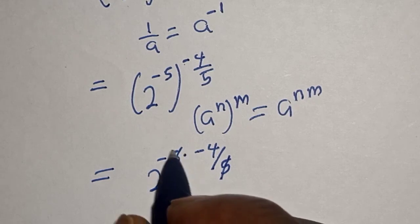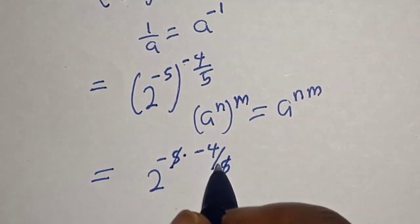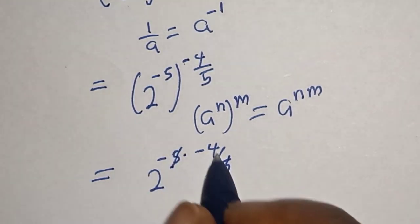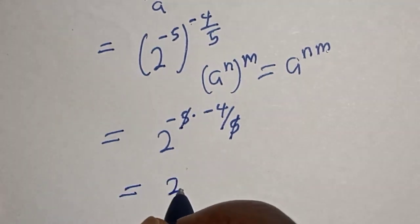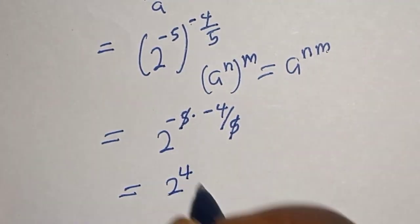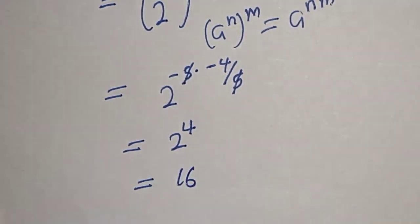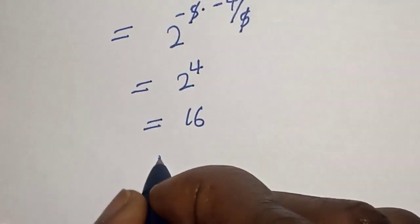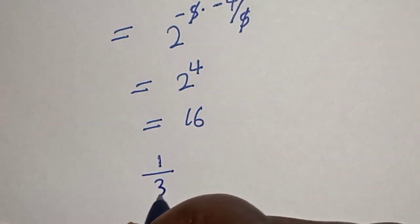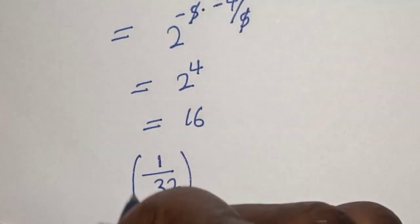If you multiply minus 5 by minus 4, you have plus 4. This is equal to 2 raised to power 4, and 2 raised to power 4 is equal to 16. Therefore, 1 over 32 raised to power minus 4 over 5...